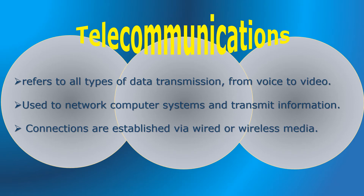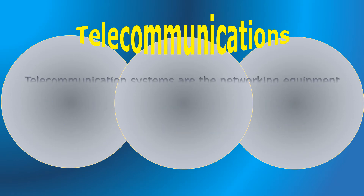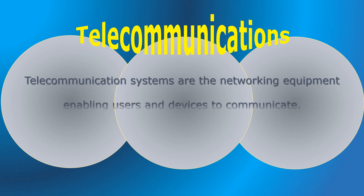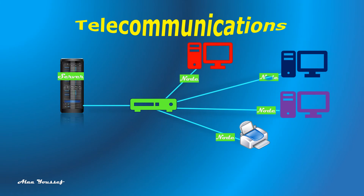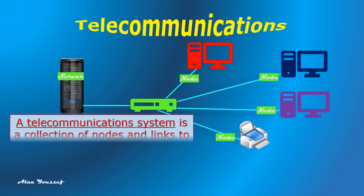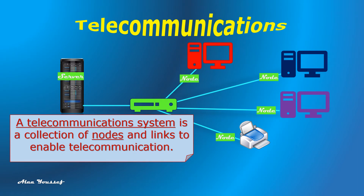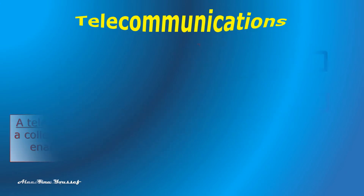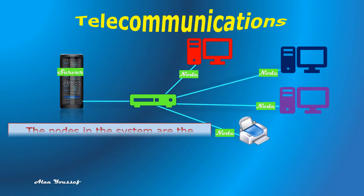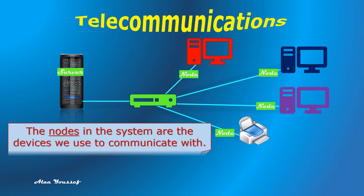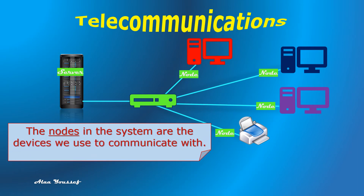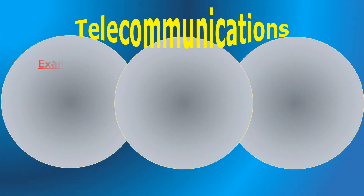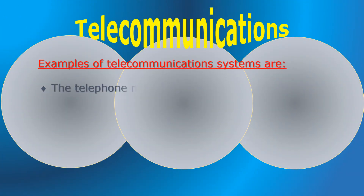Telecommunication systems are the networking equipment enabling users and devices to communicate. A telecommunications system is a collection of nodes and links to enable telecommunication. The nodes in the system are the devices we use to communicate, such as a telephone or a computer. Examples of telecommunication systems include the telephone network, the radio broadcasting system, computer networks, and the internet.